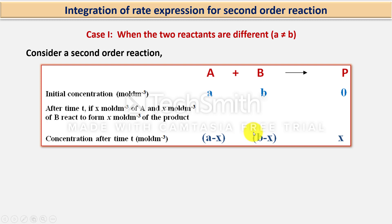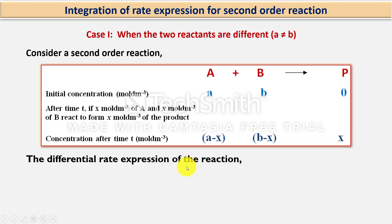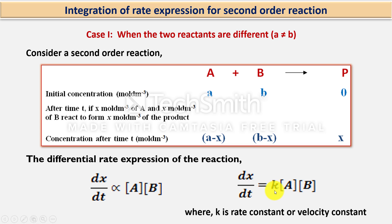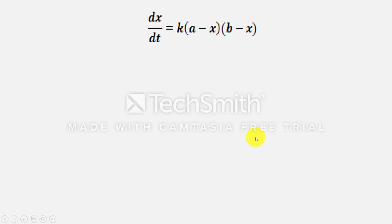Since the rate of the reaction depends on concentration of the reactants, the differential rate equation can be written as dx/dt, that is change in concentration with time, directly proportional to the product of concentration of reactants A and B. Or dx/dt = k(A−x)(B−x), where k is the rate constant or velocity constant.